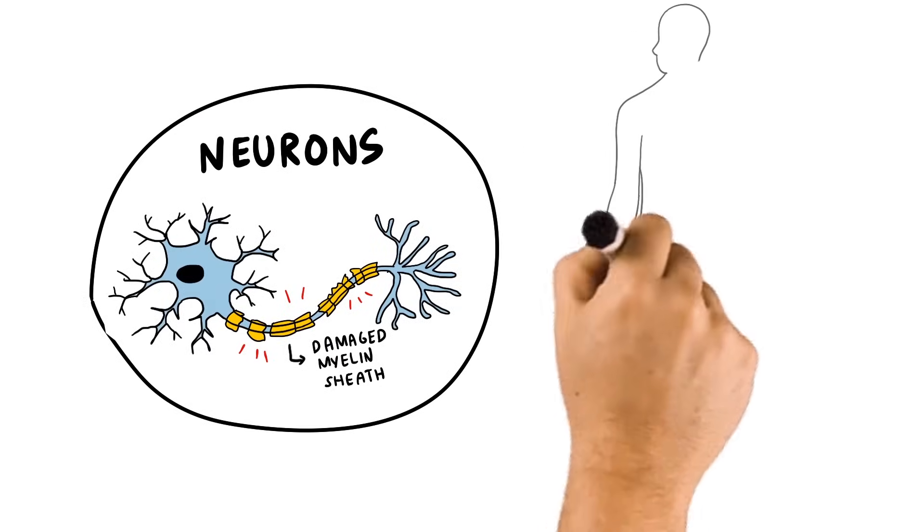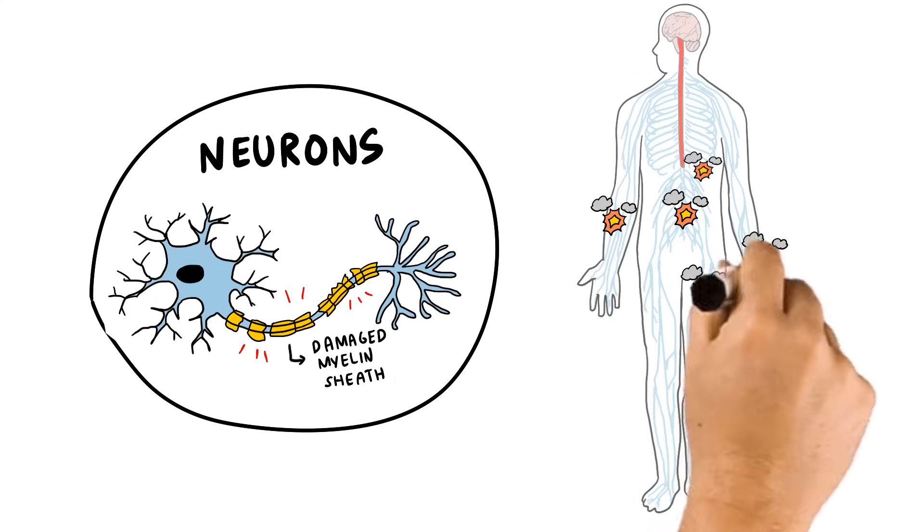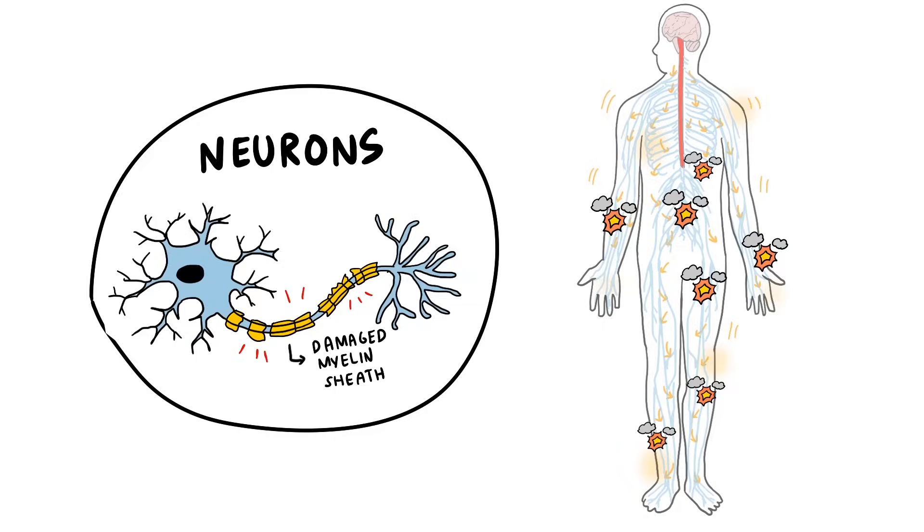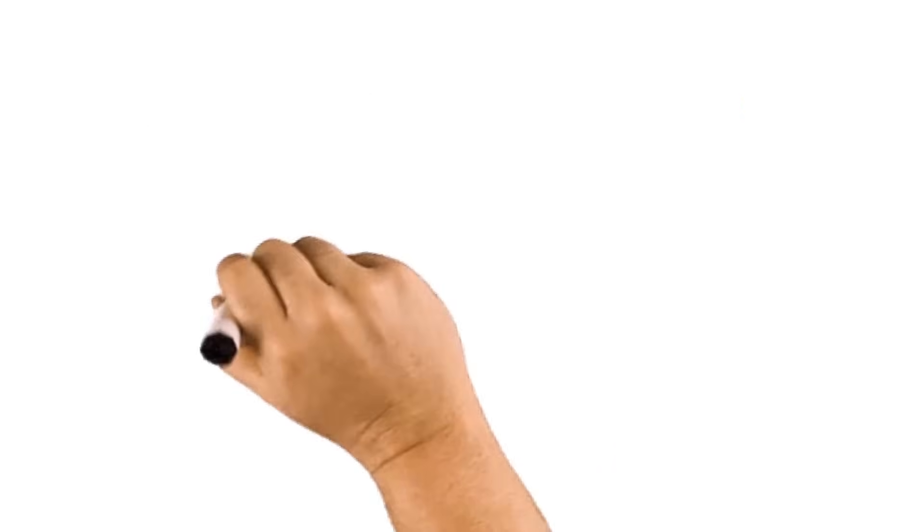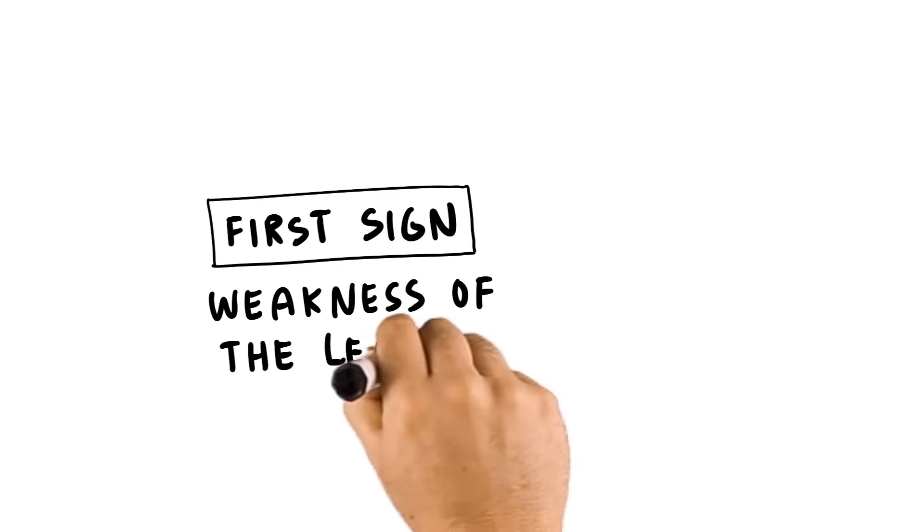But with GBS, the myelin coating around the nerves is damaged and removed, which stops the nerves from delivering their messages properly. The first signs of GBS are often a weakness or tingling in your legs.